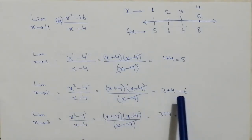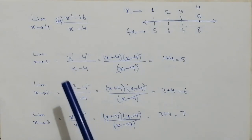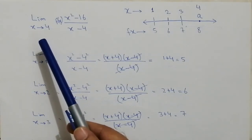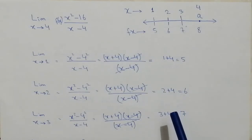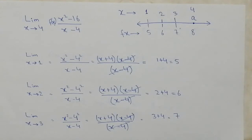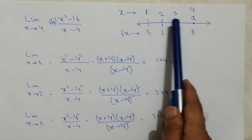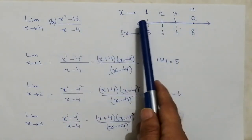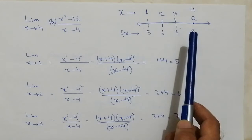It means that as x is approaching towards A — where A is 4 in this case — the f of x is approaching towards a certain value. You can see that as x is approaching towards A, that's what it is showing.